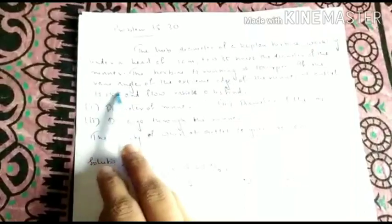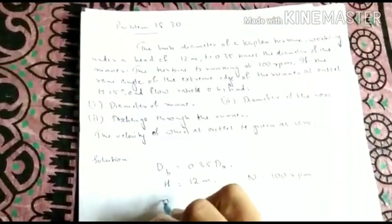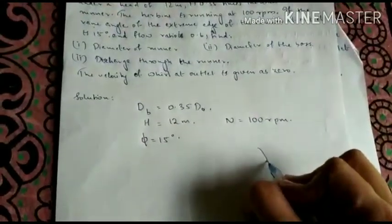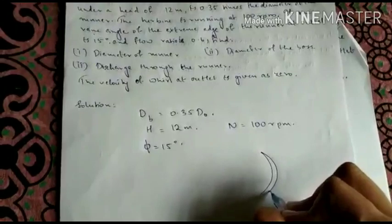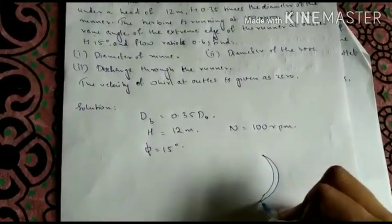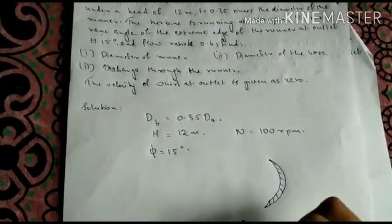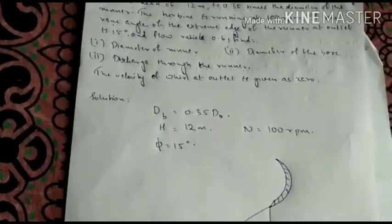Now the vane angle of the extreme edge of the runner at outlet, that is phi, is 15 degrees. So now let me draw a rough diagram of the blade. This is the blade of the Kaplan turbine.